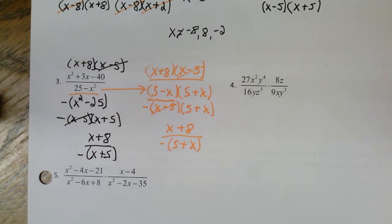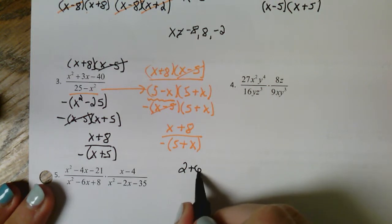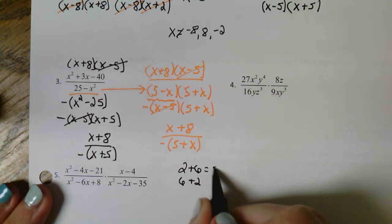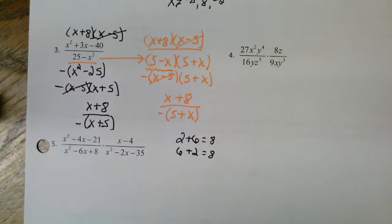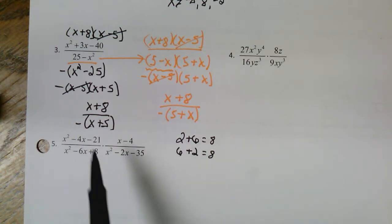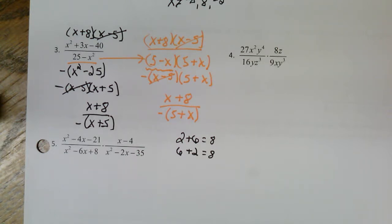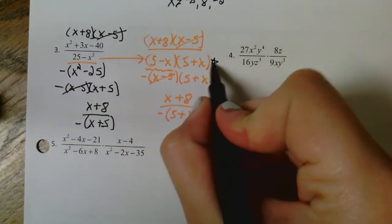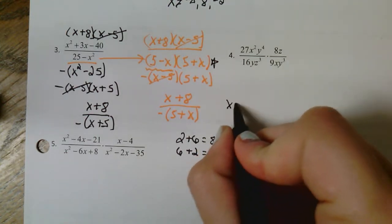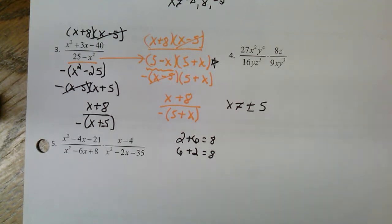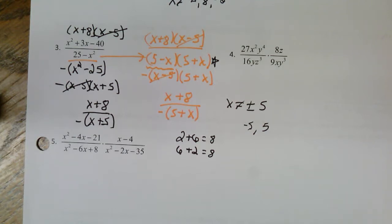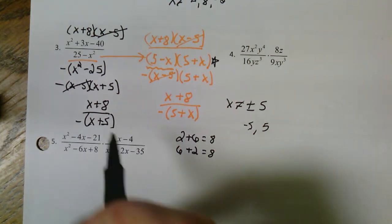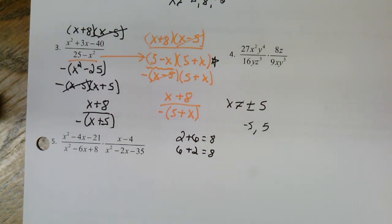A couple of people said hey, these answers are different — this one has x plus five and this one has five plus x. Yes, very true, but if I ask you what's two plus six and what's six plus two, wouldn't they both be eight? So according to addition rules it doesn't really matter which one's listed first — x plus five and five plus x are still the same. For restrictions: x cannot equal plus or minus five, since those are the denominators.